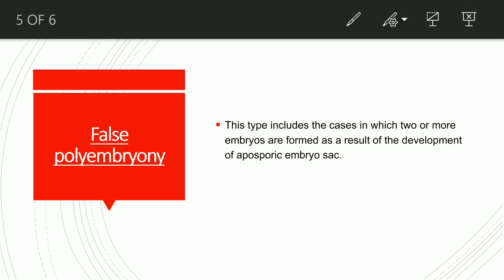The next type is false polyembryony. This includes cases in which two or more embryos are formed as a result of the development of an aposporic embryo sac.